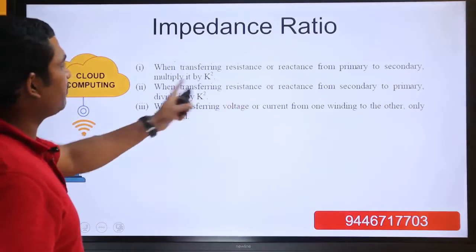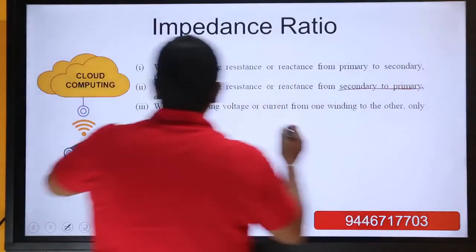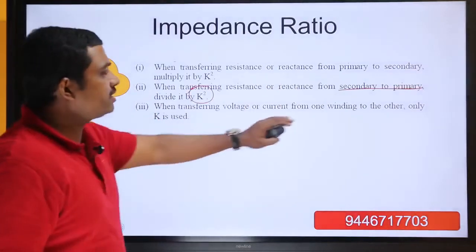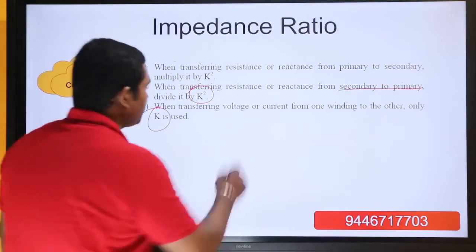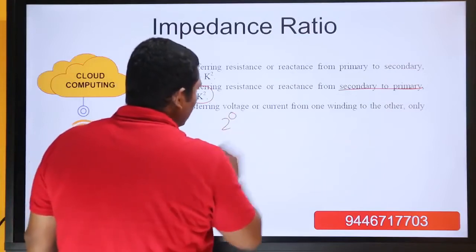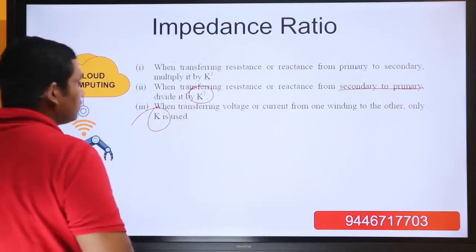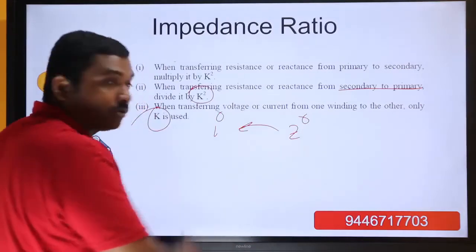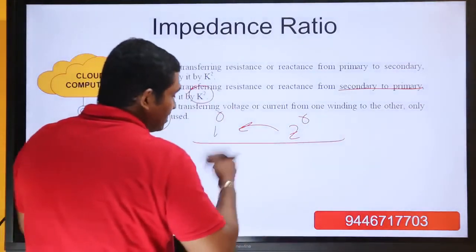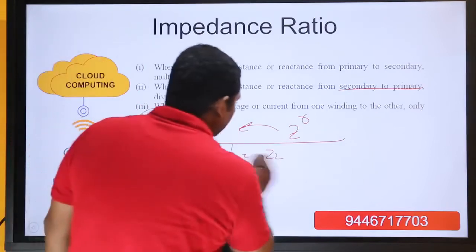When transferring resistance or reactance from primary to secondary, multiply by K squared. When transferring from secondary to primary, divide by K squared. When transferring voltages or currents, only K is used. So if you have Z2 in the secondary, its reflection in the primary is Z2 dash equals Z2 divided by K squared. R2 in the secondary becomes R2 dash equals R2 by K squared. X2 becomes X2 dash equals X2 by K squared.